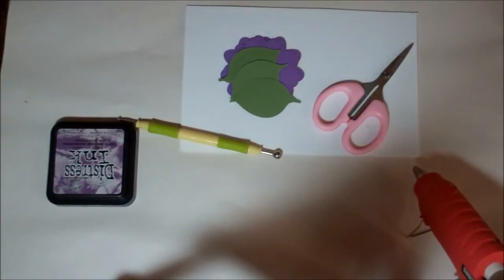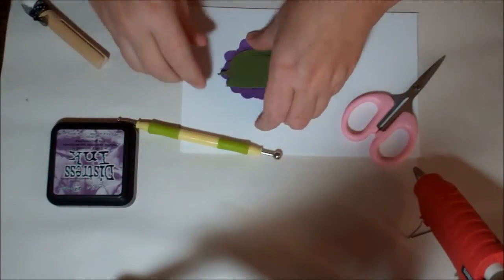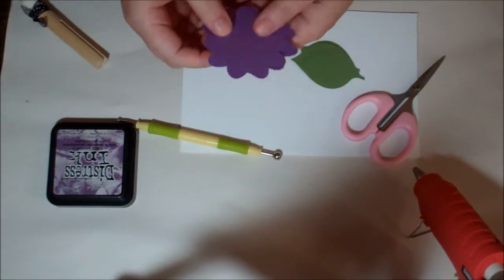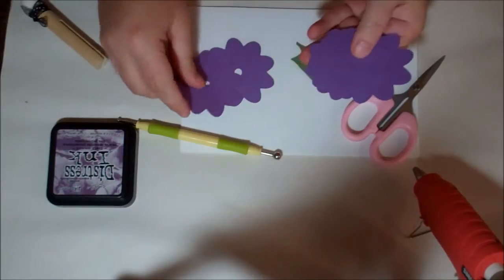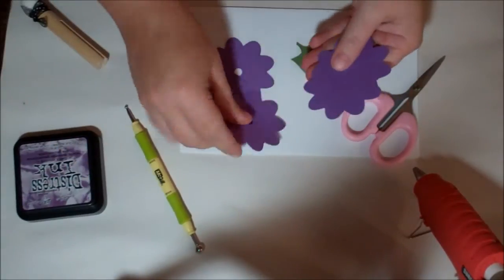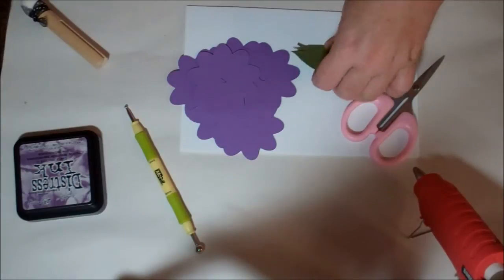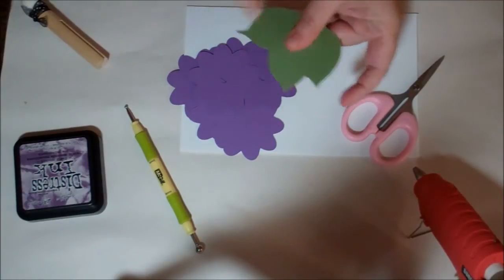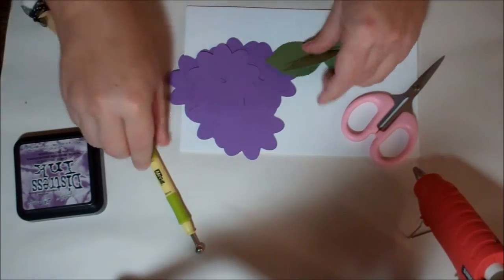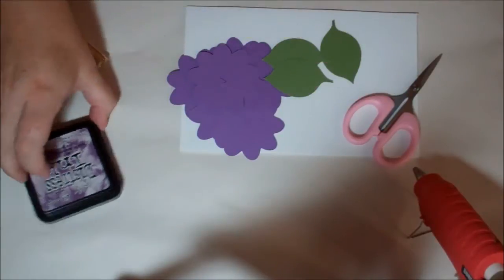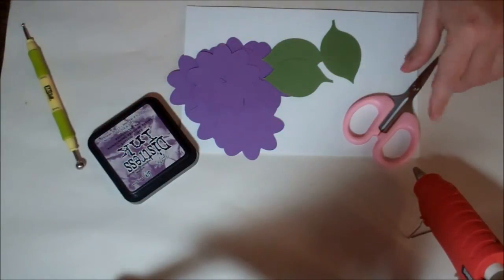What you're going to need is from your Flower Shop cartridge: one, two, three, four, five, six of the petals, and then three of the leaves, a stylus, some ink of your choice, scissors, and a glue gun.